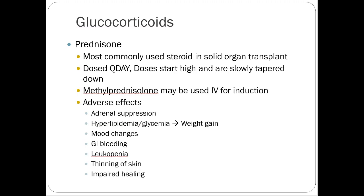The third cornerstone of solid organ transplant is glucocorticoids — prednisone is the most commonly used steroid. It's dosed once daily, starting at high doses. During induction, an IV dose of methylprednisolone approaching 1000 mg may be given, then tapered down to a target of approximately 5 mg orally per day for maintenance. Long-term adverse effects are a consideration, but at small maintenance doses, they should be minimal.